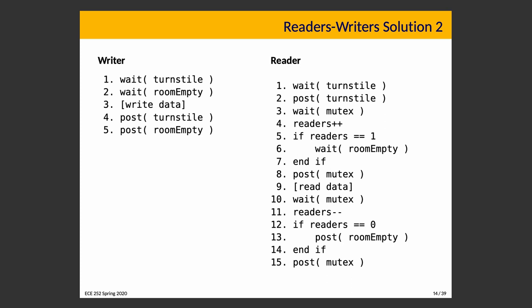The only scenario that's different is if a writer has locked the turnstile — then readers get blocked at the turnstile before they are allowed to proceed. When the writer posts on turnstile, it could unlock the turnstile and unblock either a reader or another writer — it doesn't matter very much which one. It is important to remember that when a thread gets unblocked after waiting on a semaphore or mutex, the order in which those threads are unblocked is decided by the operating system — not necessarily first-come-first-served.